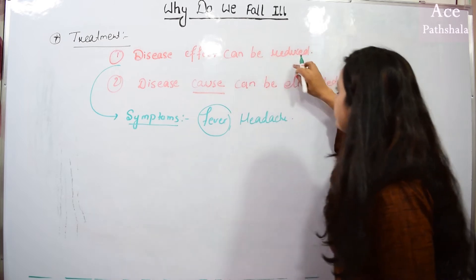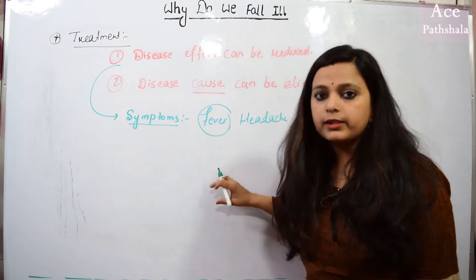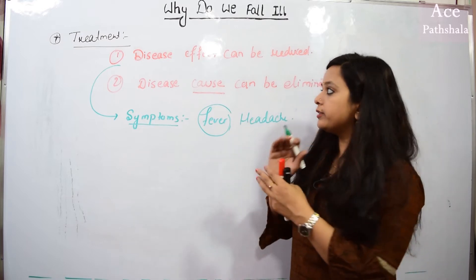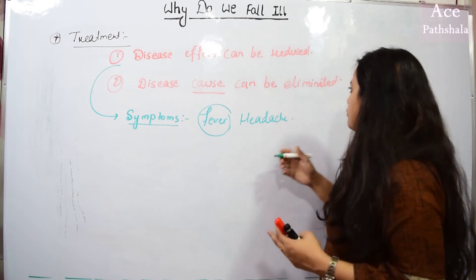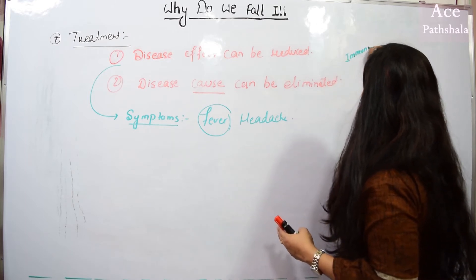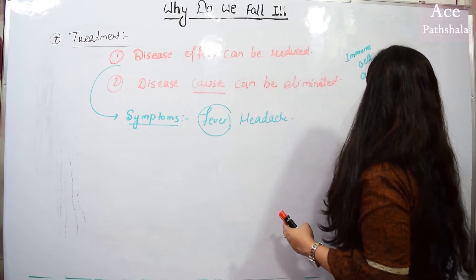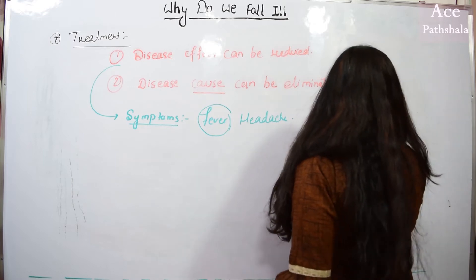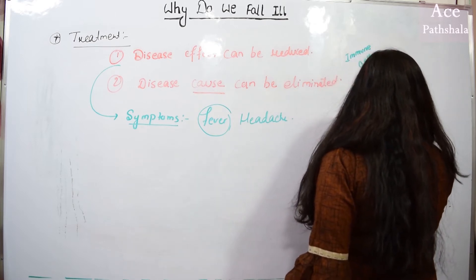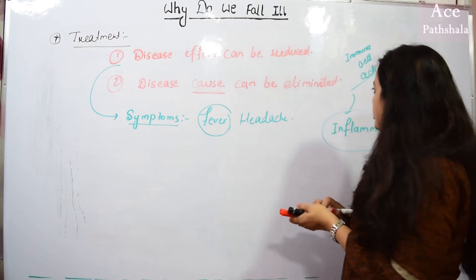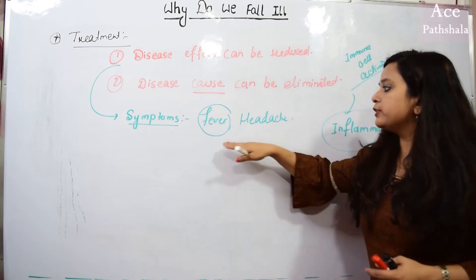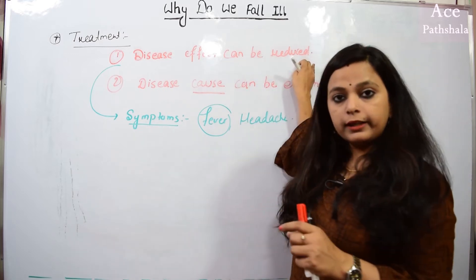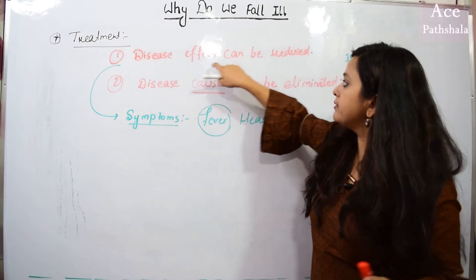So we can reduce the effects of disease by giving medicines to reduce fever and headache — that way the disease effect is diminished. Our immune cells get activated, and when the immune cells are activated, inflammation occurs. Remember, there is redness and swelling because our immune system is activated — that is the immunological response. When we reduce the inflammation, fever, or headache, we get relief. This is the first part of treatment: we reduce the effects of disease.